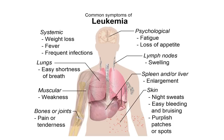Common symptoms of leukemia can be organized by body system. Psychological changes include fatigue and loss of appetite — fatigue often caused by decreased red blood cell counts leading to anemia. Lymph nodes may be swollen, and spleen or liver enlargement may occur from leukemic cells invading those organs. The skin may show easy bleeding, bruising, purplish patches, and patients may complain of night sweats.